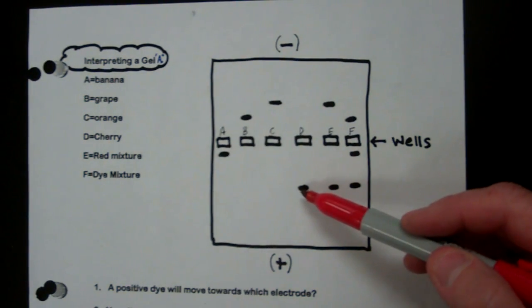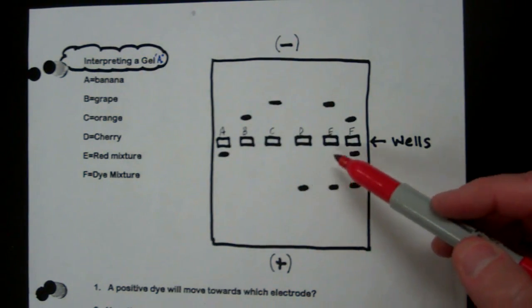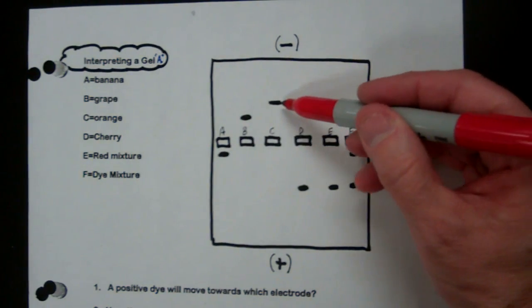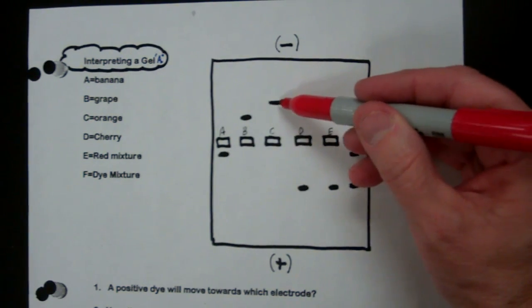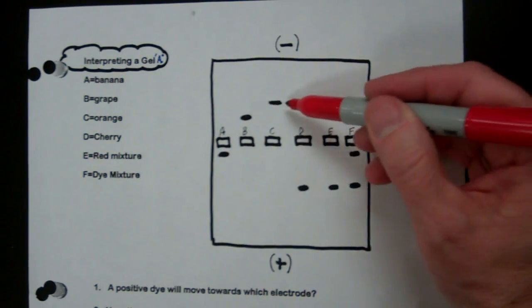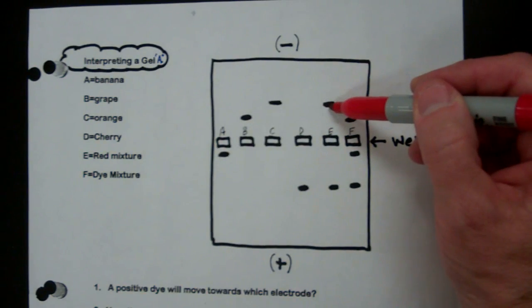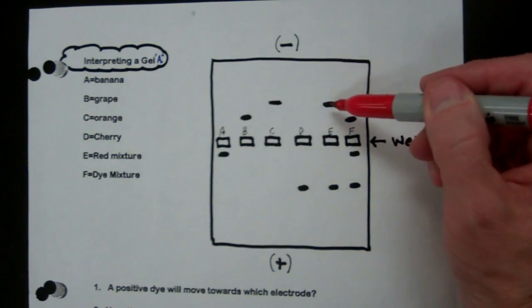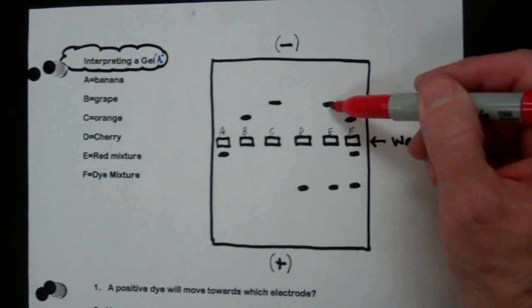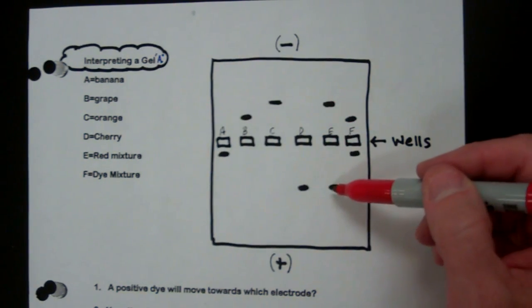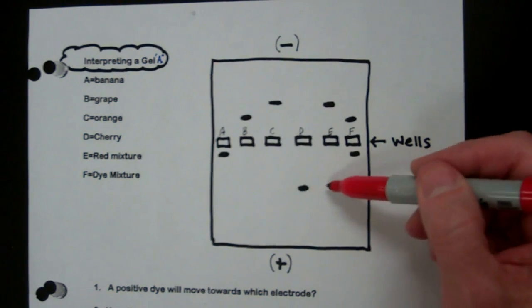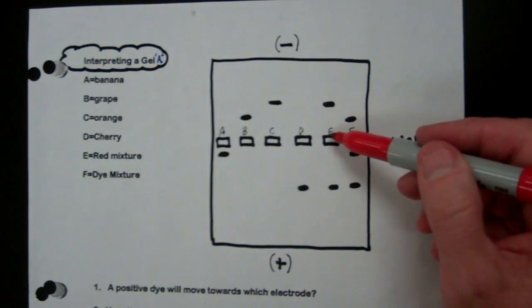Now E is a red mixture. So E has what in it? Well, it's at the same level as this one. So that must mean that C is in this mixture. It's at the exact same place. So we know that orange is in this red mixture. And what else is in the red mixture? This one is at the exact same place as D. So orange and cherry are in E.